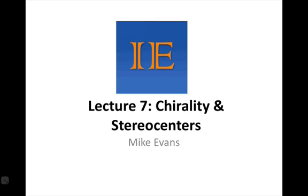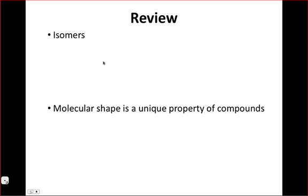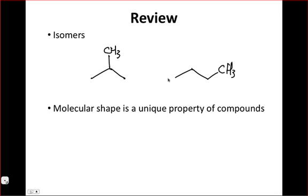Before we get to talking about chirality, I just wanted to review some of the concepts we dealt with last time related to isomers and molecular shape. We talked about isomers as molecules that have the same molecular formula but different connectivity. The example I gave was C4H9 — if we take three carbons in a row, we can generate two isomers by either placing that fourth methyl group attached to the middle carbon or attached to one of the end carbons. They have the same number of carbons and hydrogens but differ in connectivity.